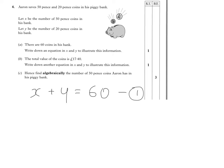That's my one mark out of three. Part B says the total value of the coins is £17.40. Write down an equation in x and y to illustrate this information. Well there's x number of 50p coins and y number of 20p coins. Altogether this totals up to be £17.40.